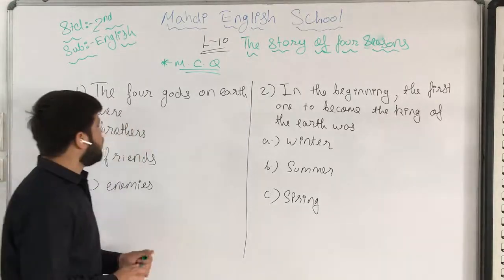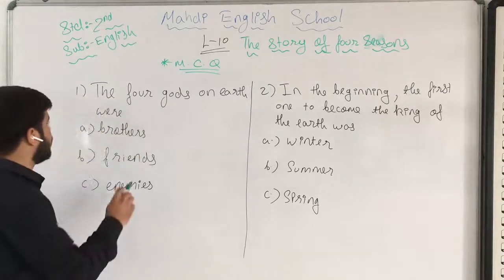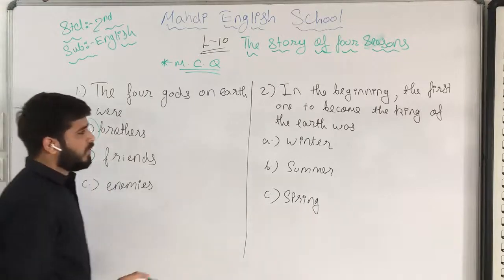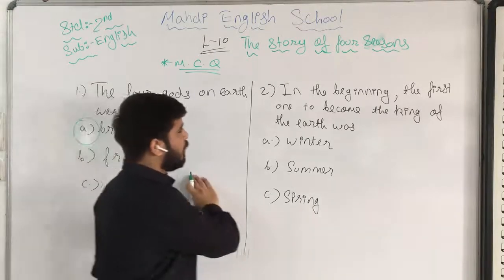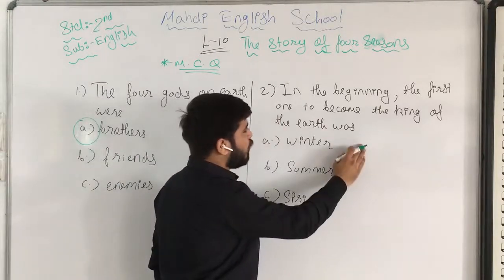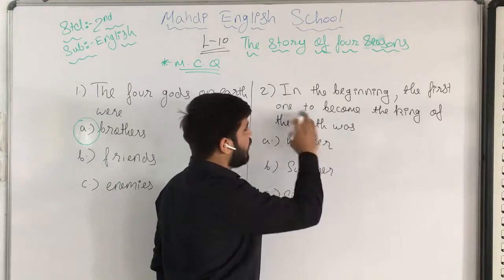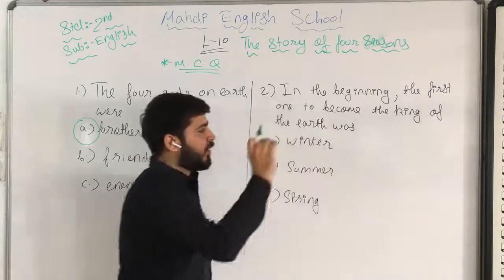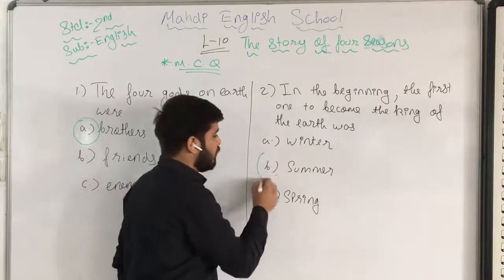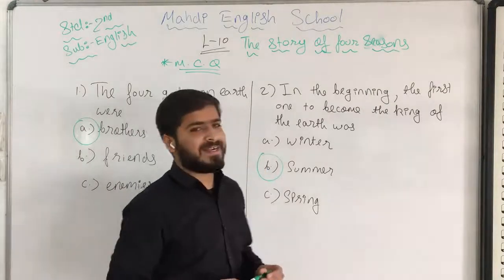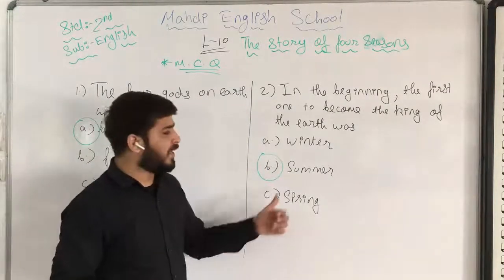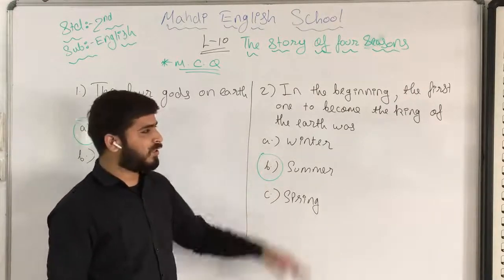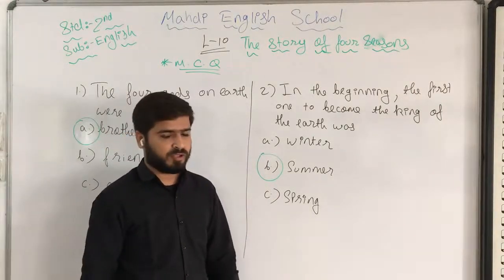So the correct answers are: question 1 — option A, which is brothers. And for question 2, in the beginning the first one to become king was summer, who was the eldest brother. Pick the correct answer as I have done. I am going to clear the board and write another 2 to 3 questions.